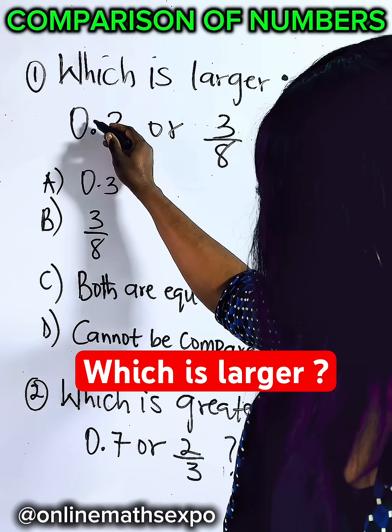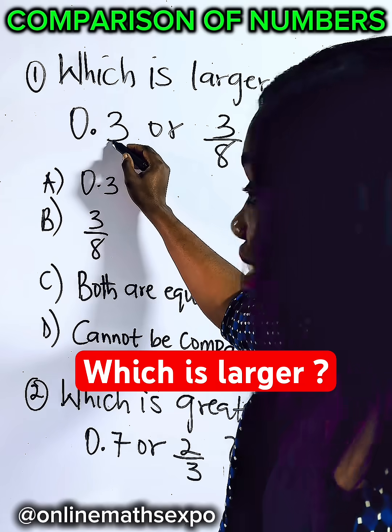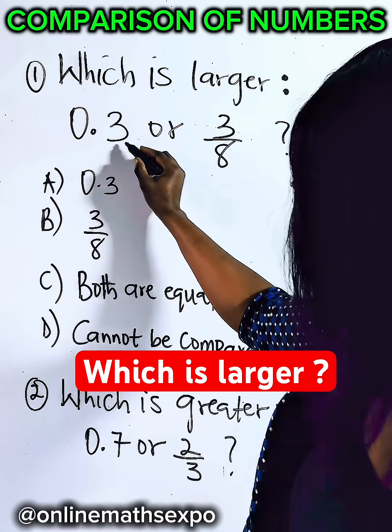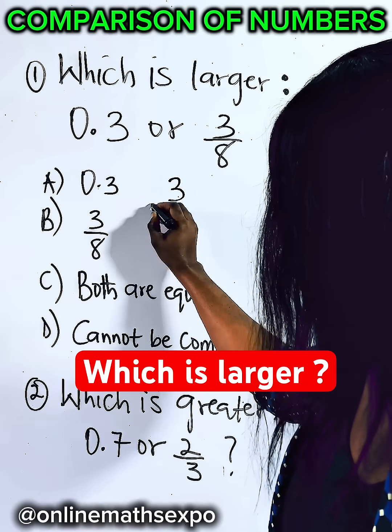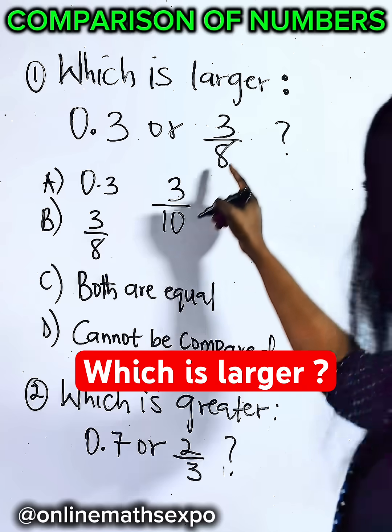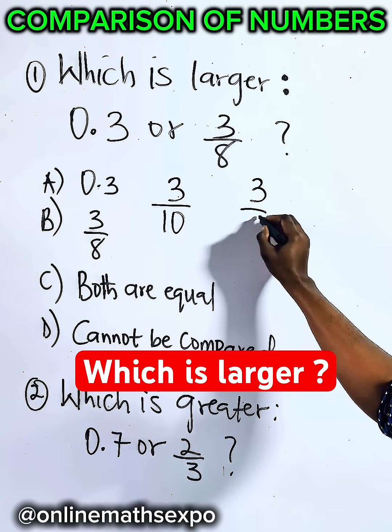First, let's convert this to a fraction. 0.3 is 3 tenths, so it means we are going to have 3 divided by 10. And what we have here is 3/8.